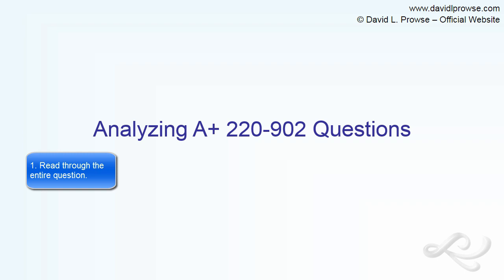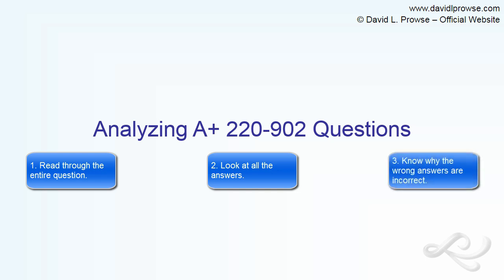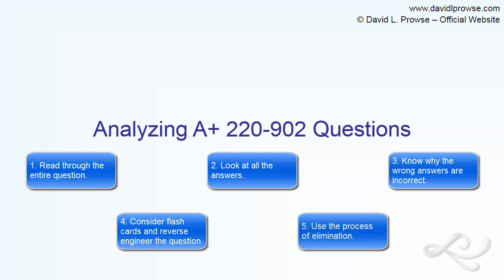First, read through the entire question carefully. Next, look at all the answers. Know why the correct answer is correct, but also why the incorrect answers are incorrect. When studying, reverse-engineer the question and consider flashcards. And when taking the real exam, use the process of elimination if necessary. We'll review these during the first question.